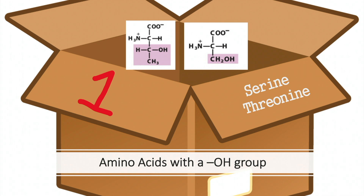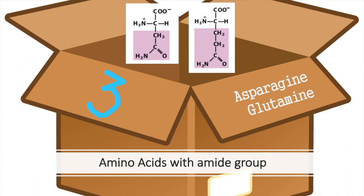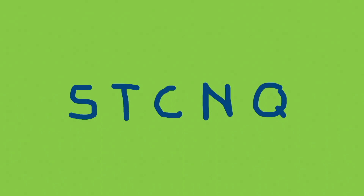The two amino acids that fall into the first box are serine and threonine, because they are the only two amino acids in this category that contain a hydroxyl group. One amino acid falls into the second box: cysteine, because it contains a sulfur atom in the R-group. In the third box we have asparagine and glutamine, because their R-groups contain an amide group. In the acronym STICNIC, the first box has two amino acids, the second box has one, and the third box has two as well.